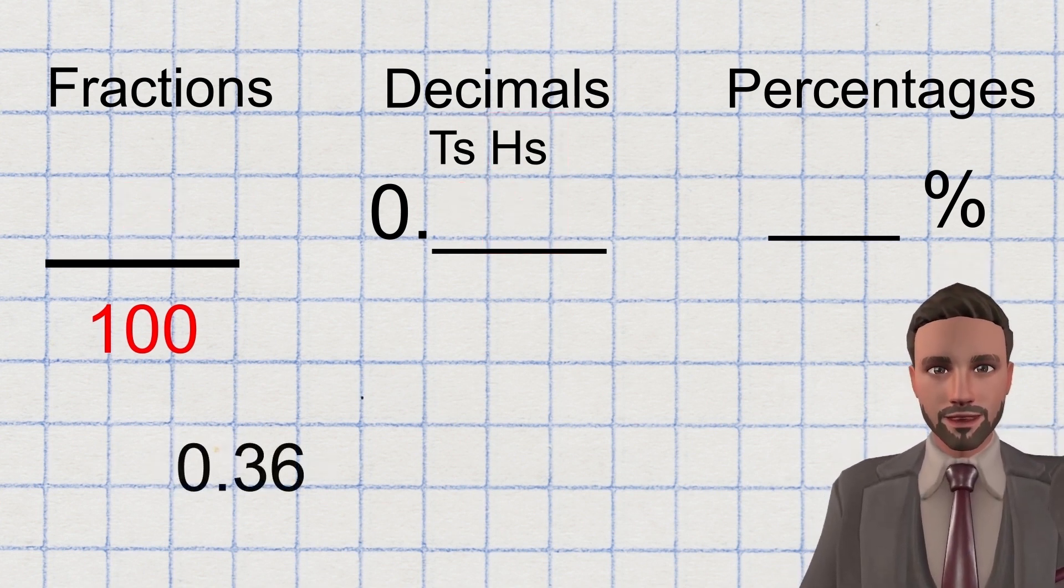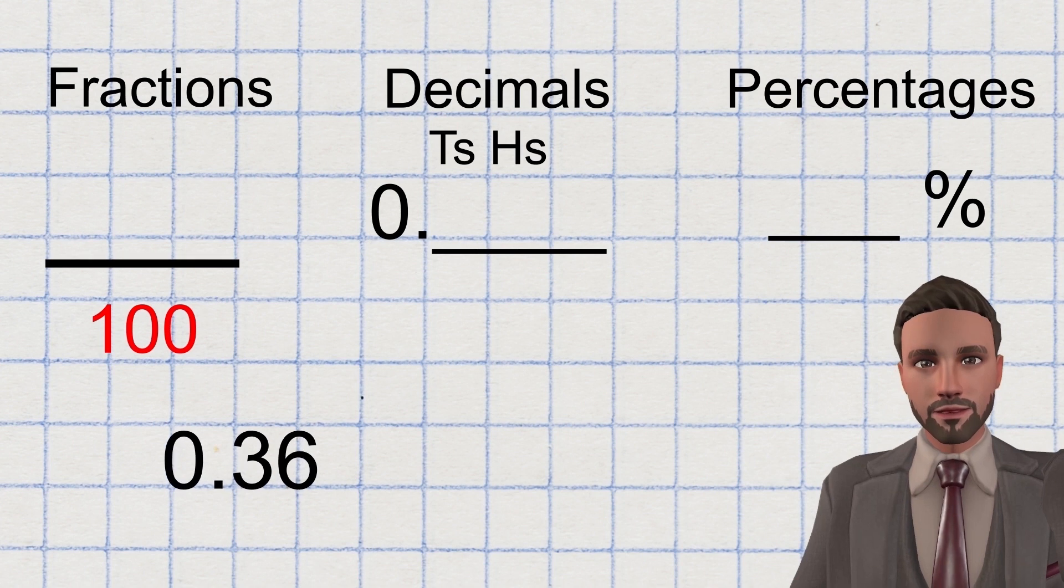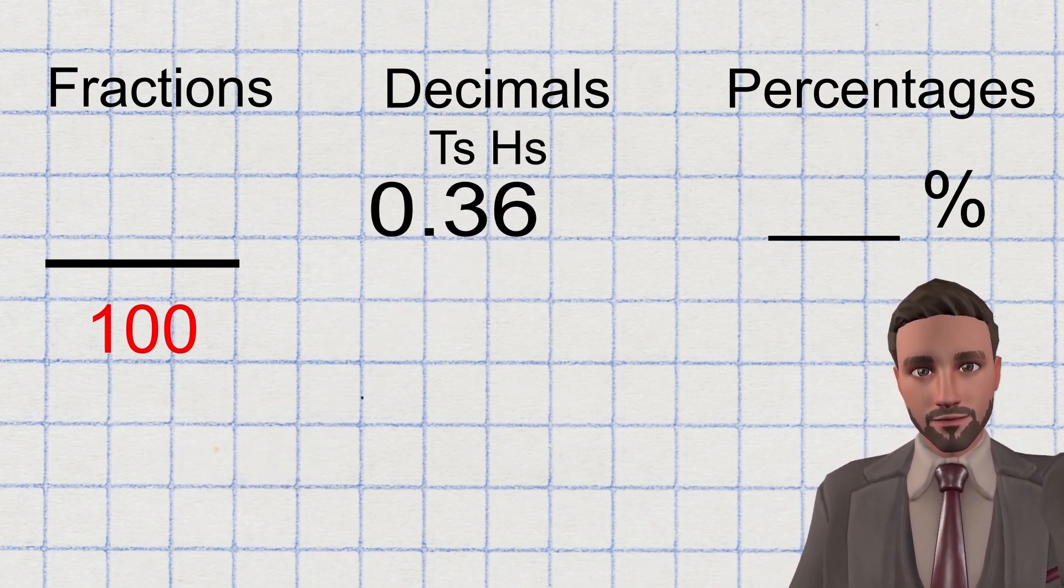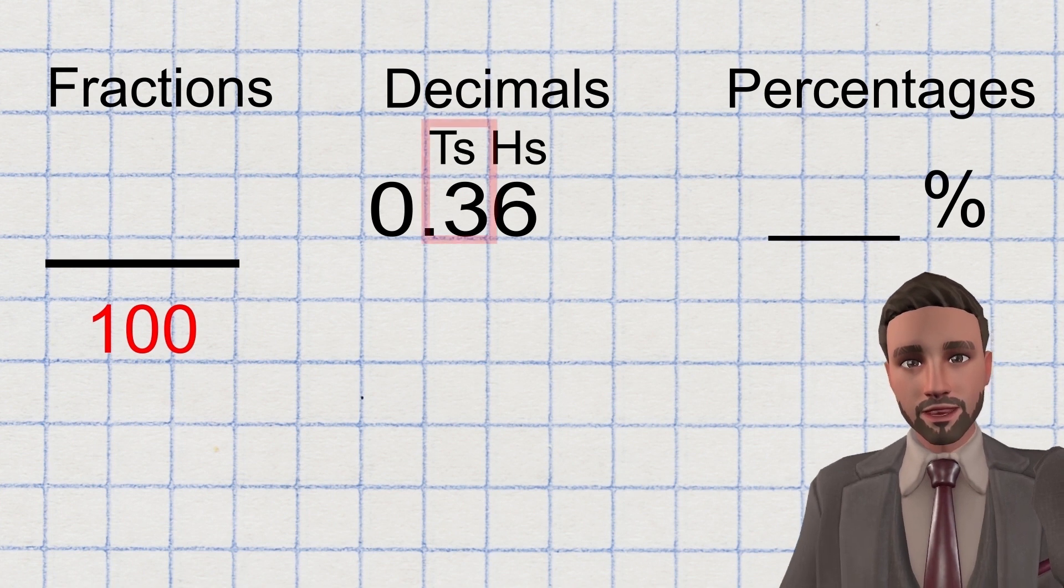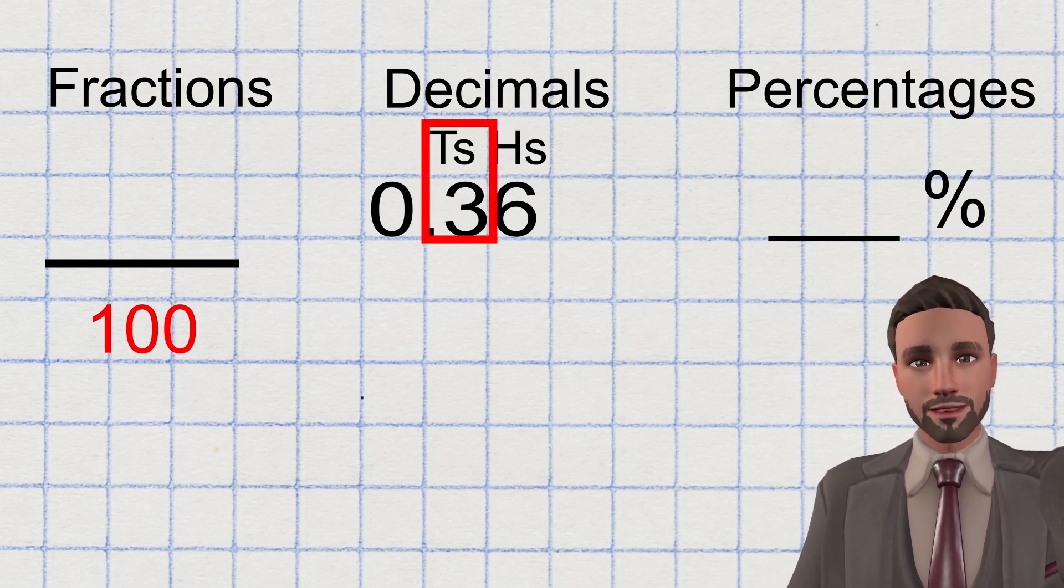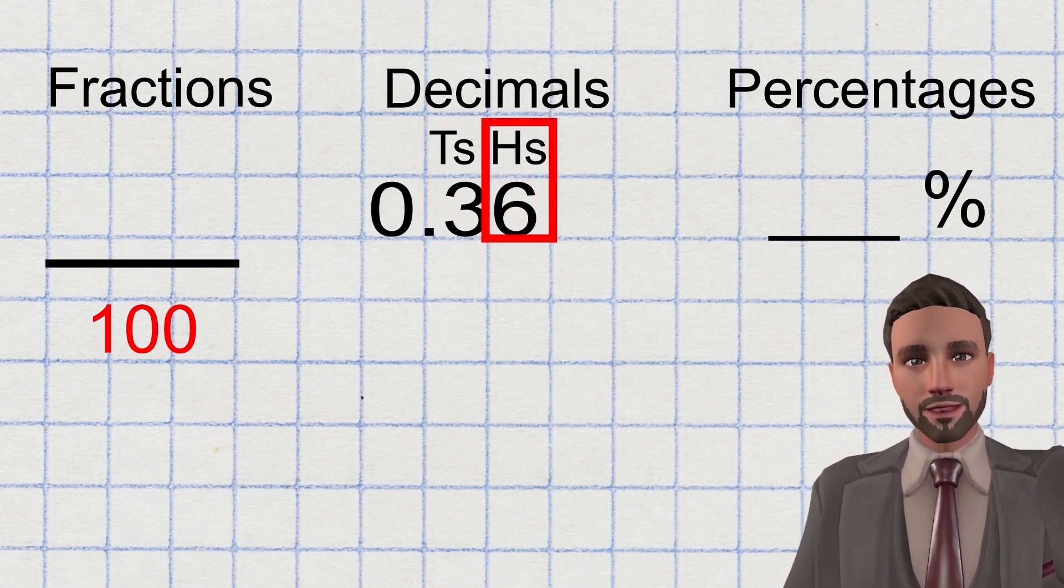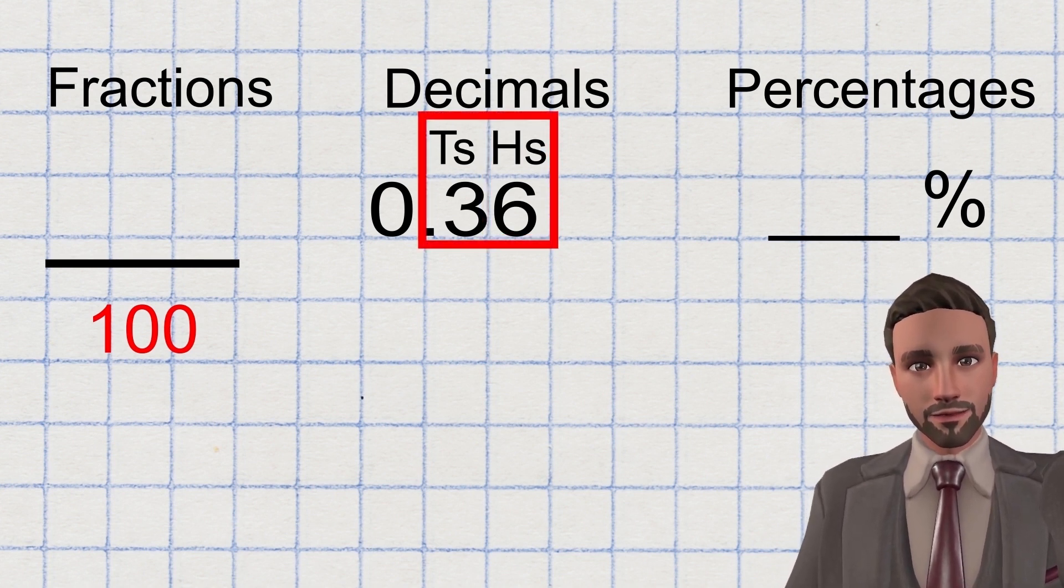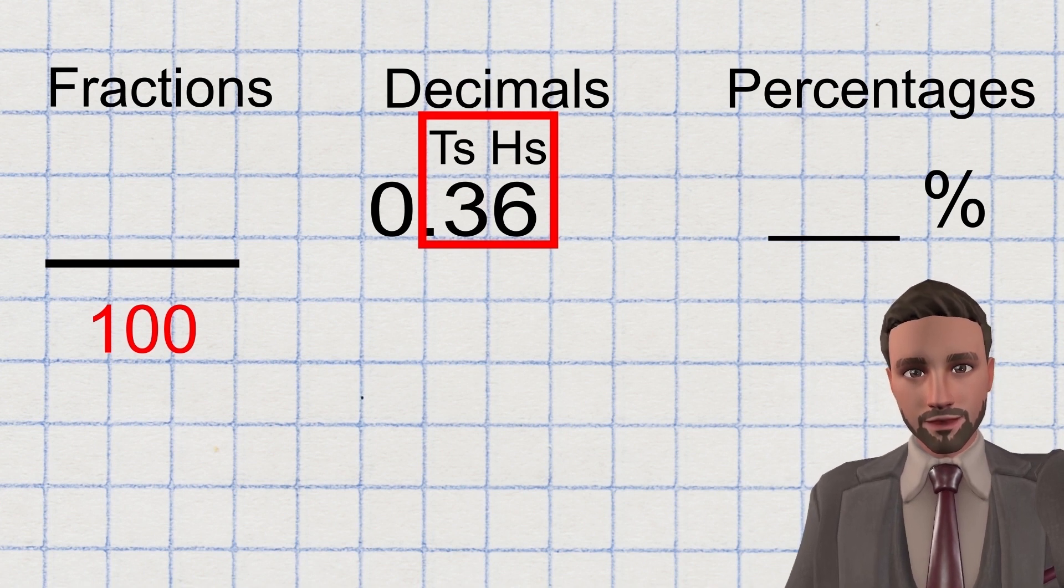Let's take a look at another one together. We have 0.36. If we place this into the decimals, we will see that 3 is in the tenths and the 6 is in the hundredths. The whole number after the decimal is 36. And the last column is the hundredths column. So that number is 36 hundredths.